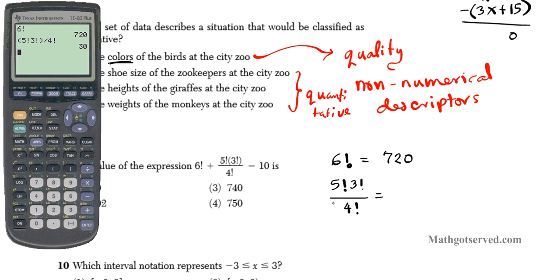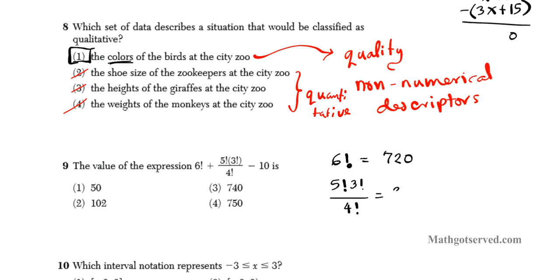720 for the first one and the second one, it's 30. So what are we computing now? We are going to find 6 factorial is 720 plus 5 factorial times 3 factorial over 4 factorial is 30 minus 10. We can even do this mentally, right? 720 plus 30 is 750 minus 10. And your answer is 740. You can clearly see that option 3 is our correct answer here.